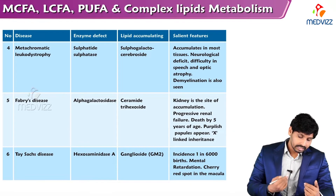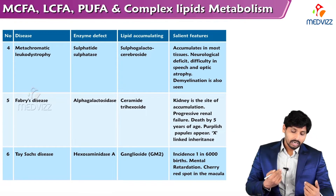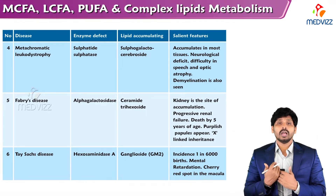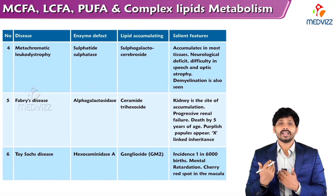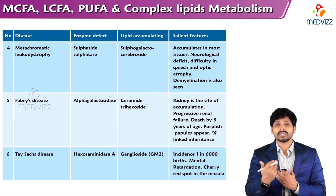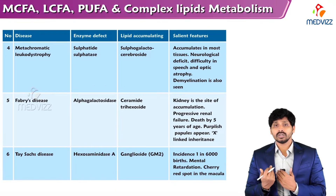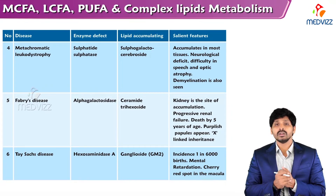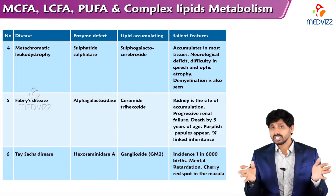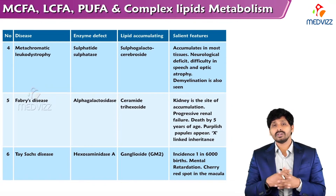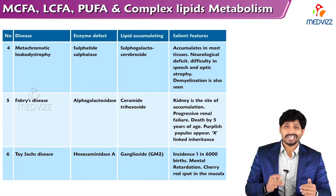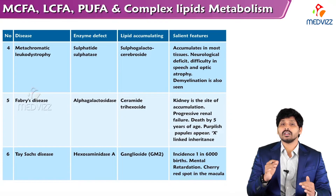The fifth is Fabry's disease. The enzyme defect is alpha-galactosidase and the lipid accumulating is ceramide trihexoside. The kidney is a major site of accumulation, leading to progressive renal failure and death by the fifth year of age. Purplish papules appear on the skin and it is X-linked in inheritance.